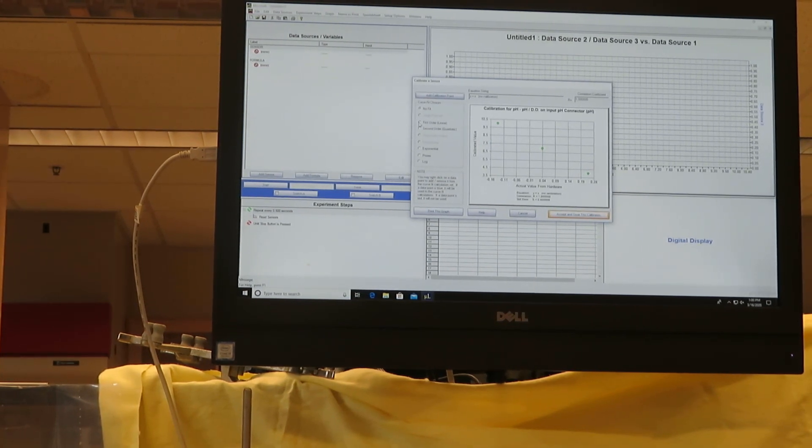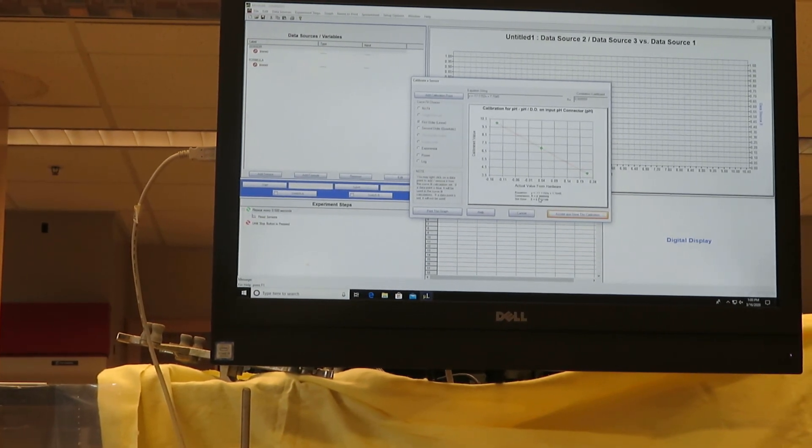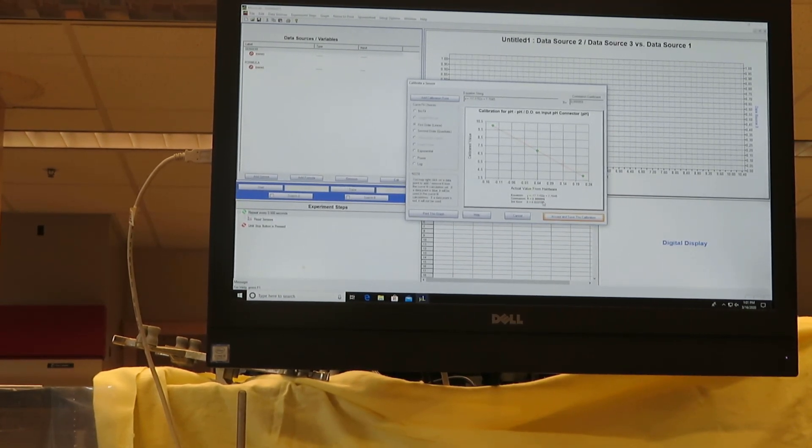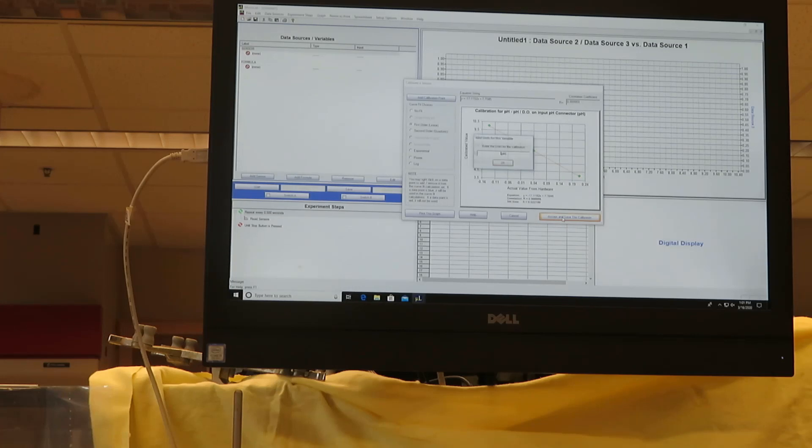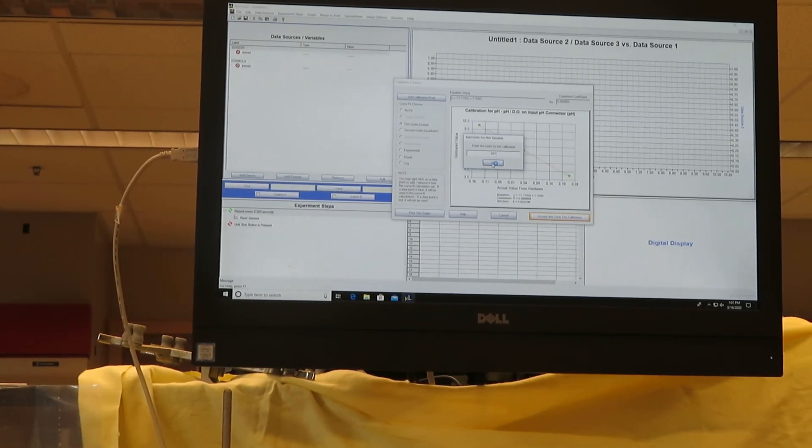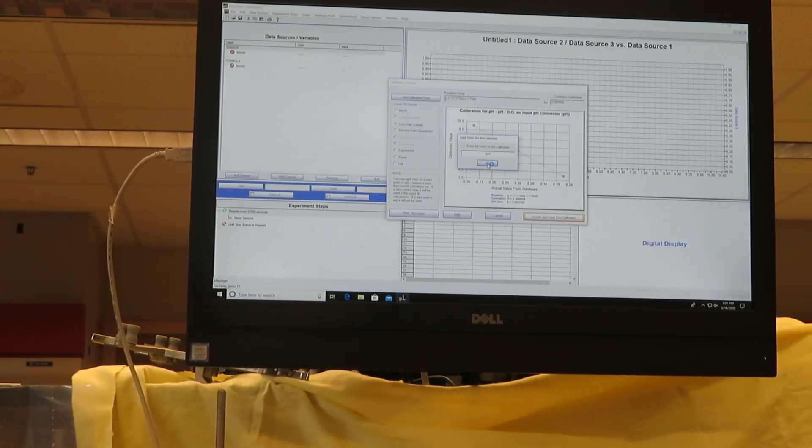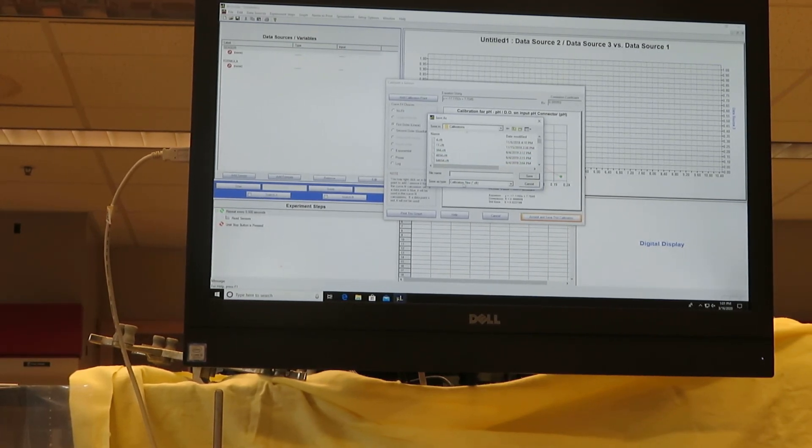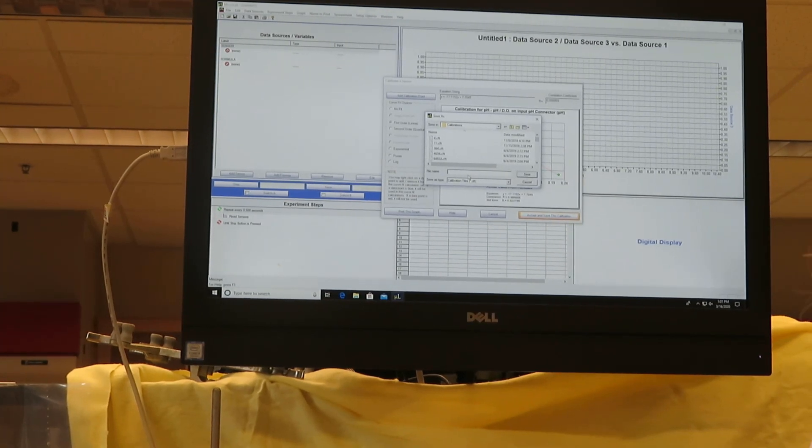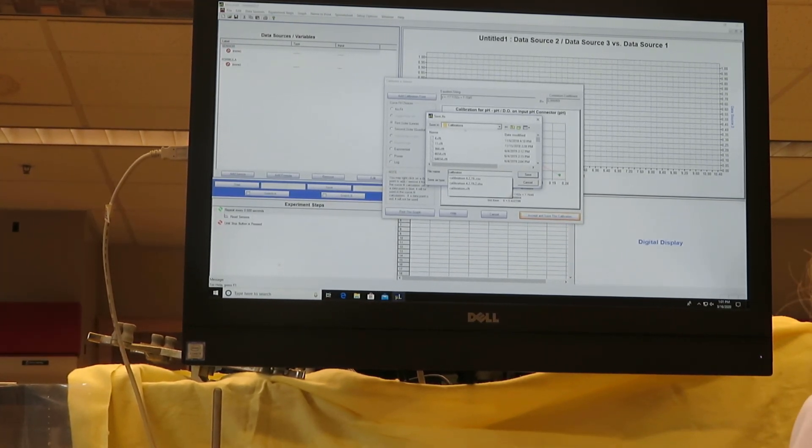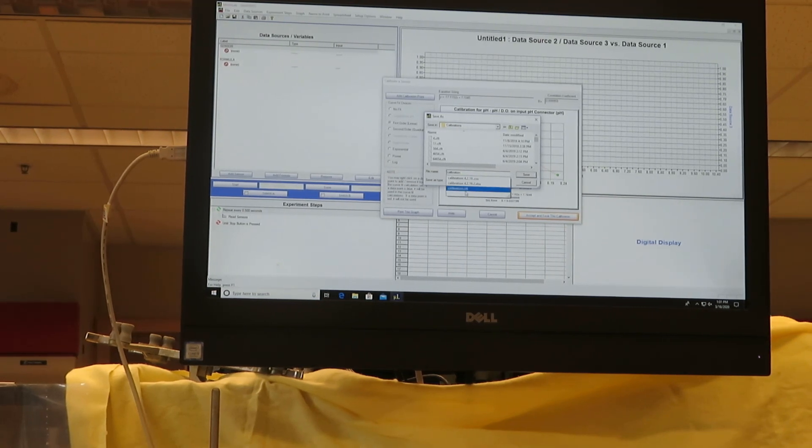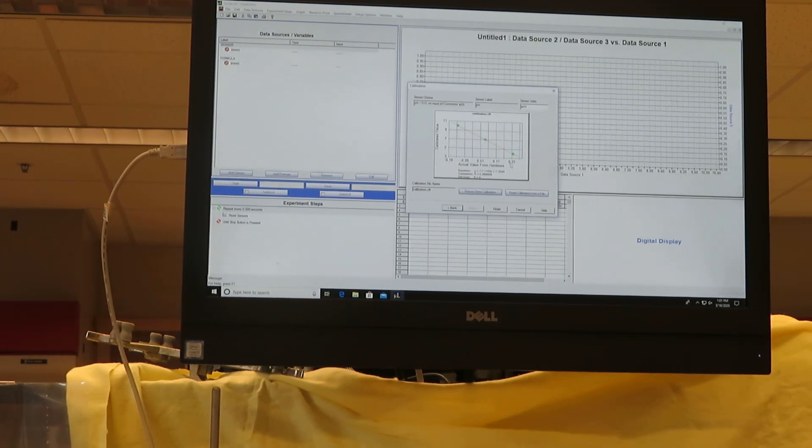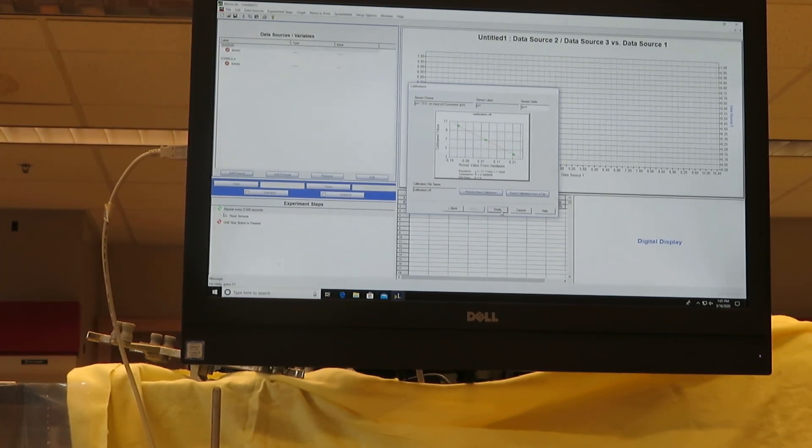Now I will make a first order linear fit, and you notice it's beautiful. The correlation coefficient is 0.999. I will accept and save this calibration, and the units for this variable will be pH. I will replace the old file. I am now finished.